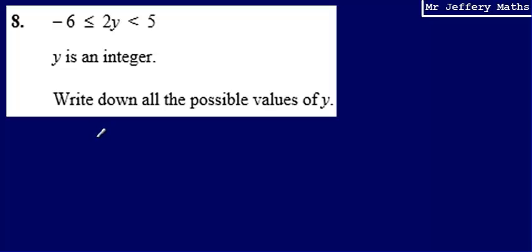This is question 8 from a series of videos taking a look at the Edexcel practice papers. Here we've got an inequality telling us that 2y is greater than or equal to negative 6, but that 2y is less than 5. We're told that y is an integer, so that word integer just means a whole number.